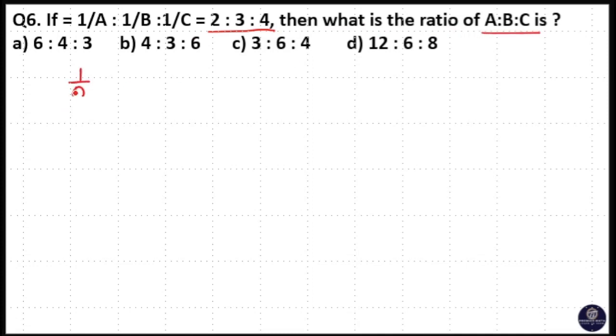Here 1/A : 1/B : 1/C = 2 : 3 : 4. So you have to find the A:B:C ratio from this reciprocal ratio. When you have a reciprocal ratio,